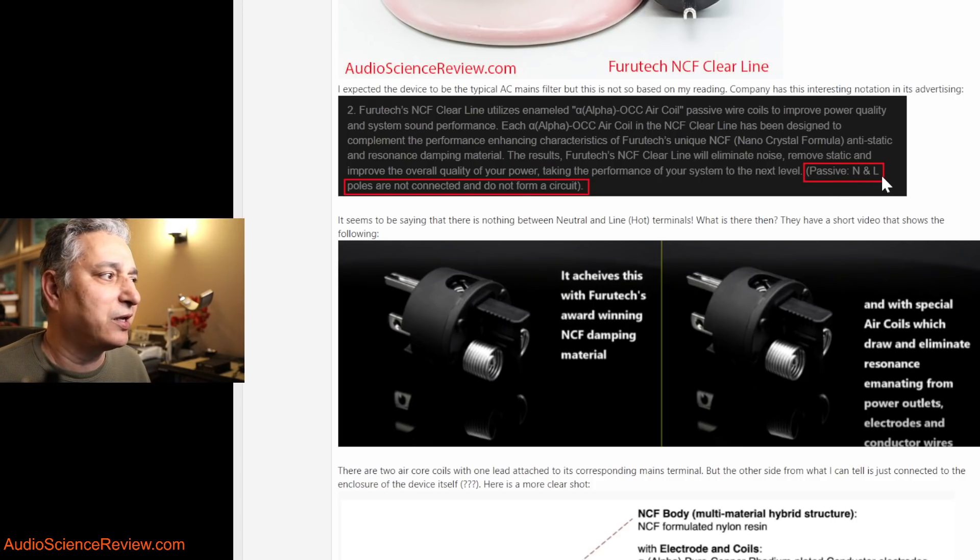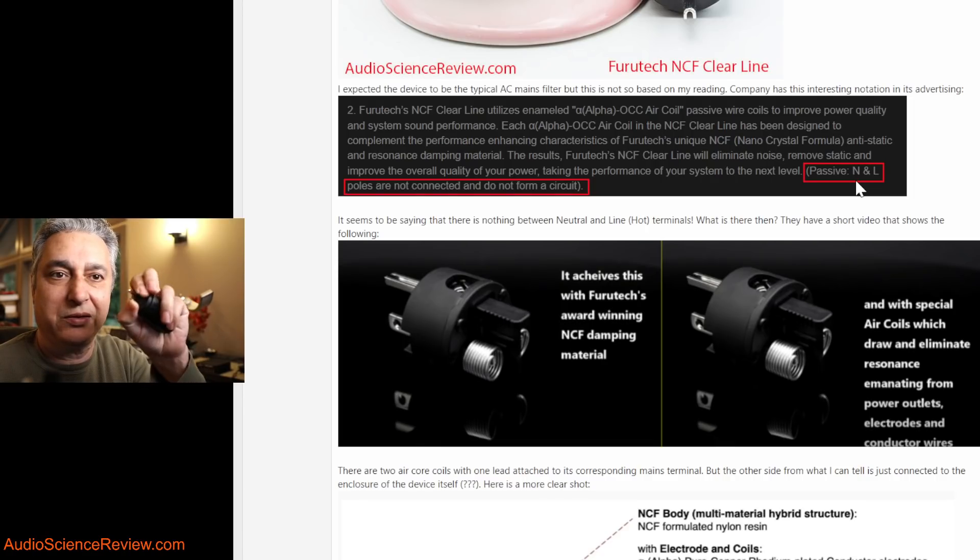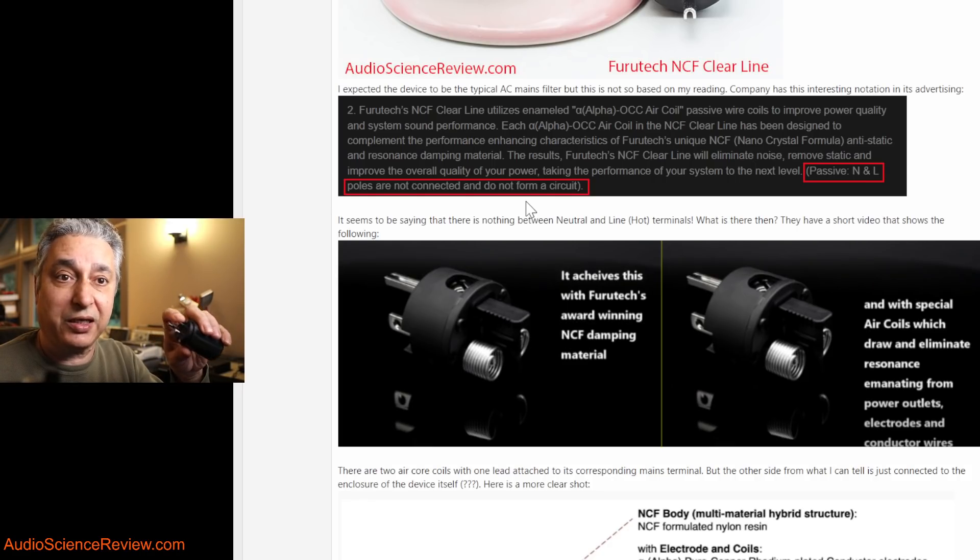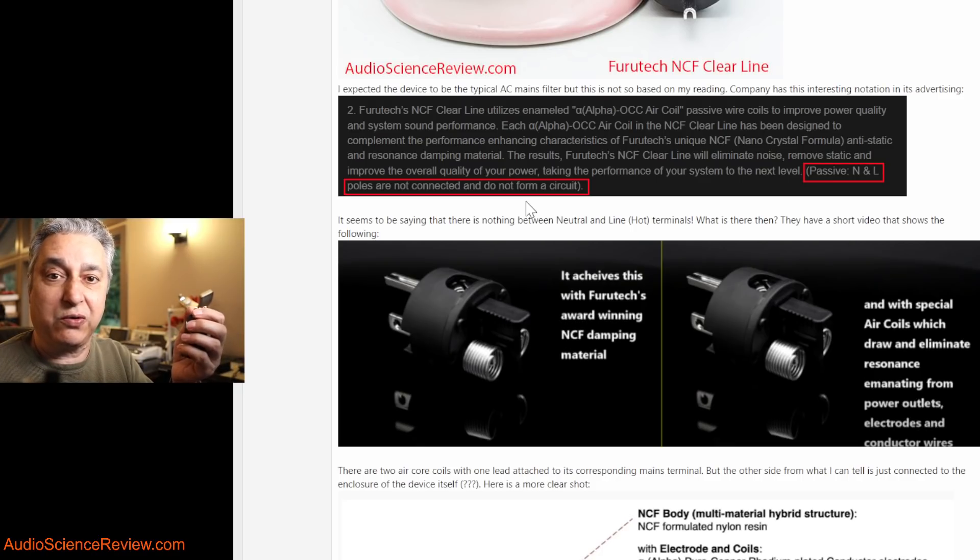It says it's passive, which doesn't mean anything. But it claims that the line and neutral, which are the two conductors that carry power in your AC, are not connected in any shape to each other and don't form a circuit. Meaning there's nothing from one pin to the other, so there can't be an electrical filter.